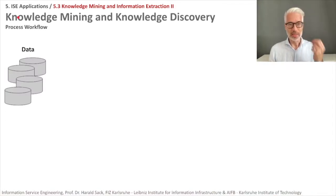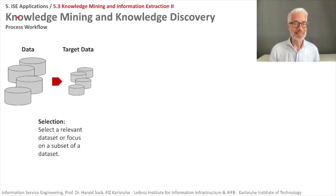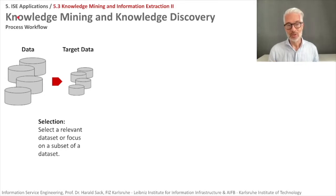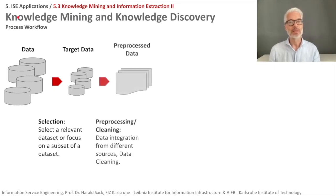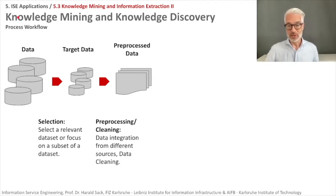Let's have a look at the process workflow for knowledge mining and knowledge discovery. We start out with the data. Of course, we do not need all of the data — we have to select our target data. This is the selection process: select a relevant dataset or focus on a subset of the dataset. For example, in the last section of the lecture we were looking for female soccer players, and we used Wikipedia or Wikidata as a source, and from that we filter out the data we really need to get the target data. Then we also saw that there were some flaws and noise in the extracted data, so we have to engage first in preprocessing and cleaning tasks.